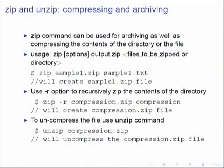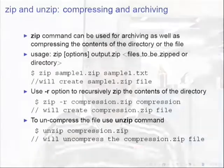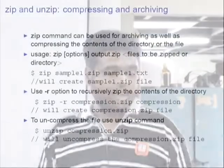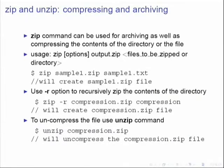If you want to specify a directory instead of a file, you have to use the -r option with zip: zip -r compression.zip compression will create a compression.zip of the compression directory. To uncompress, just type unzip followed by the zip file name. Whether it is a directory or a file, it will be unzipped and created in the directory from which you gave the command.